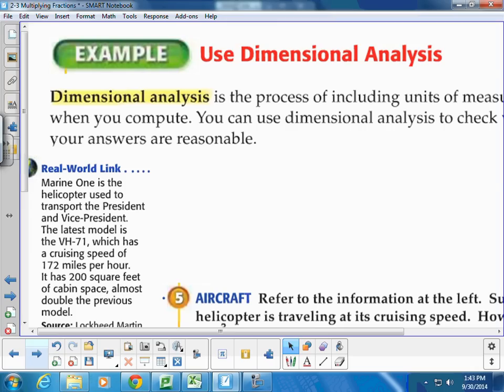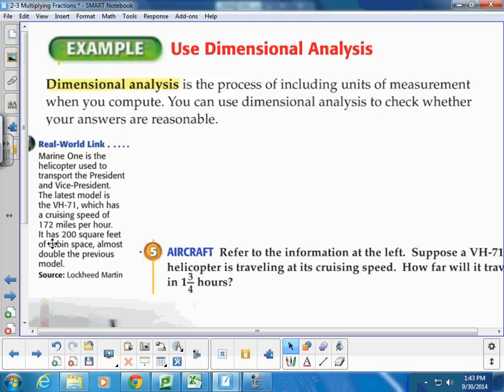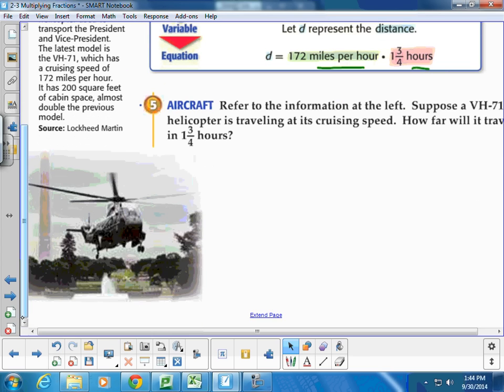One last thing is a word called dimensional analysis, and this is just the process of including units of measurement when you compute. You can use dimensional analysis to check whether your answers are reasonable. Just like we did, if I would have answered the last one in inches, it wouldn't have made sense. So we're going to look at a real world thing here. So for instance, the distance equals the rate multiplied by the time. So I just have to make sure that I have units attached to my work.